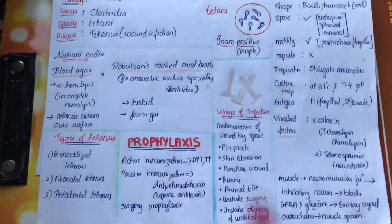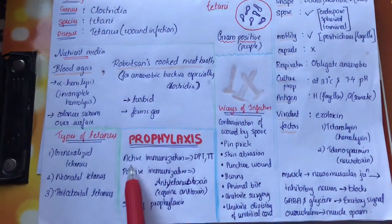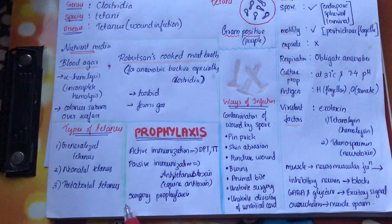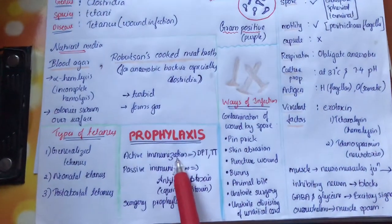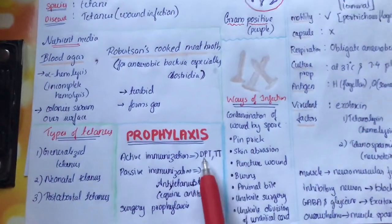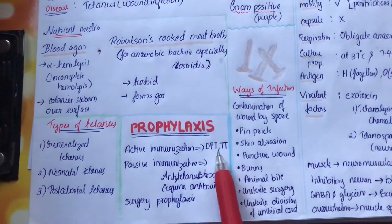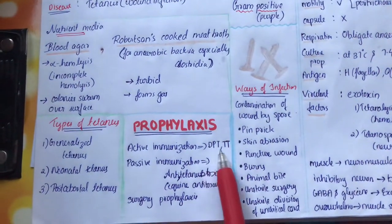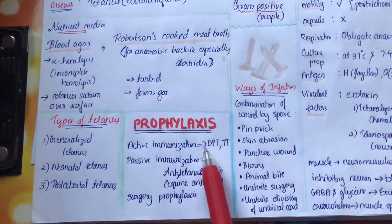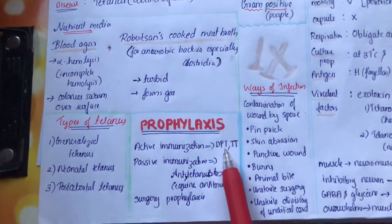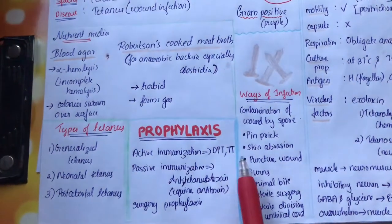Let us see the prophylaxis. There are three types: active immunization, passive immunization, and surgical prophylaxis. Active immunization involves vaccines like DPT vaccine and TT. TT is the tetanus toxoid, and DPT is the vaccine for diphtheria, whooping cough, and tetanus. In these vaccines, we use toxoids.